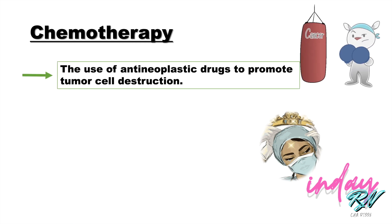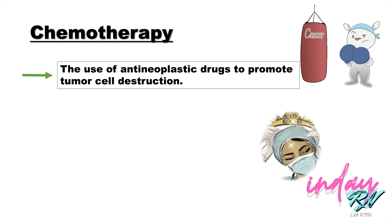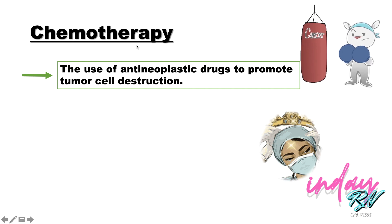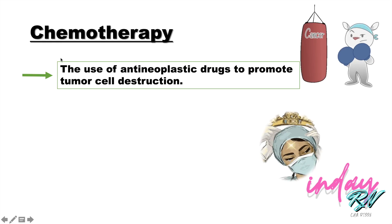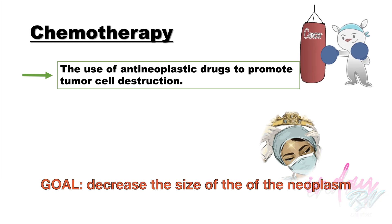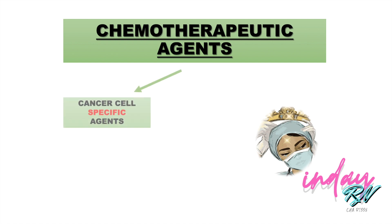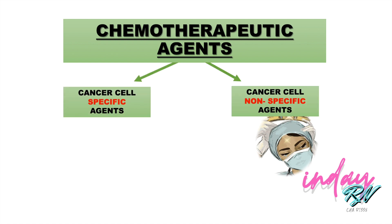Chemotherapy is the use of anti-neoplastic drugs to promote tumor cell destruction — this is the treatment given to cancer patients. These drugs act on and kill or alter human cells. Although the action is intended to attack abnormal cells, normal cells are also unfortunately affected. These drugs can work by affecting cell survival or by boosting the immune system to combat abnormal cells. The goal of cancer chemotherapy is to decrease the size of the neoplasm so the immune system can deal with it. Depending on the phase in the cell cycle, chemotherapeutic agents are divided into two categories: cancer cell-specific agents and cancer cell non-specific agents.